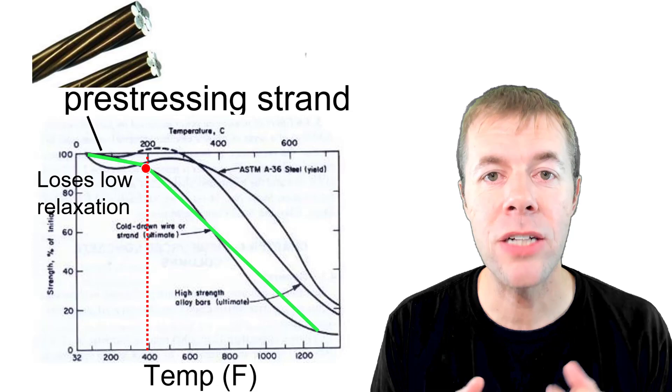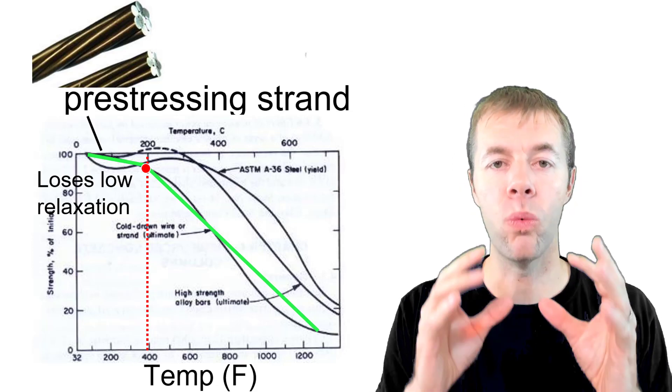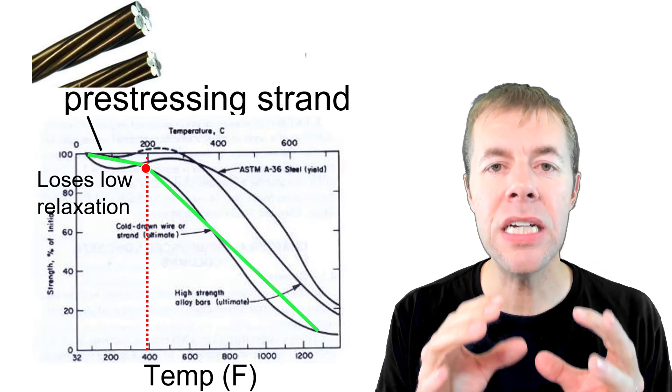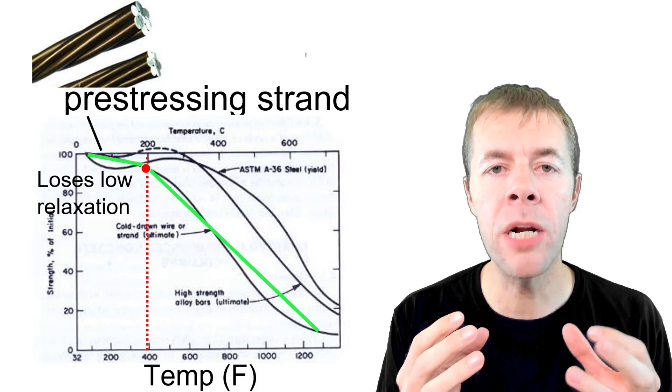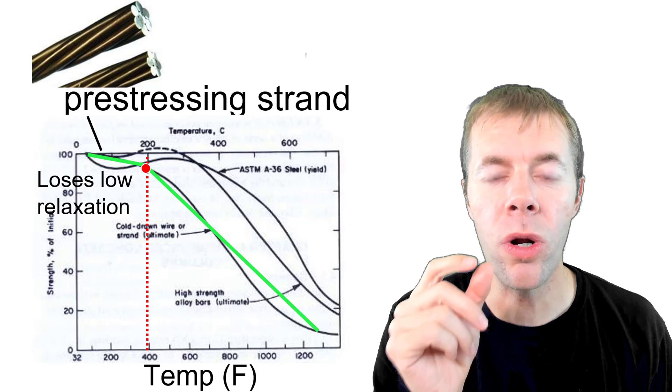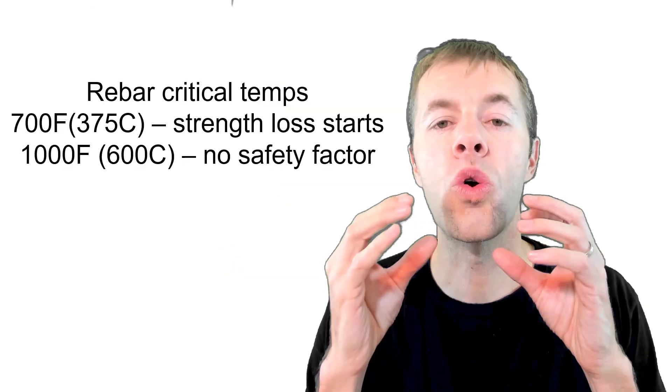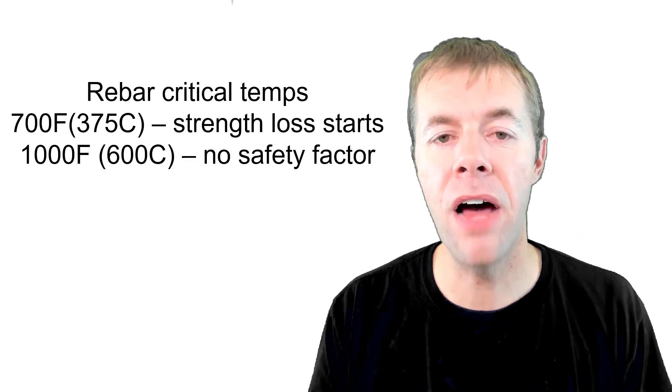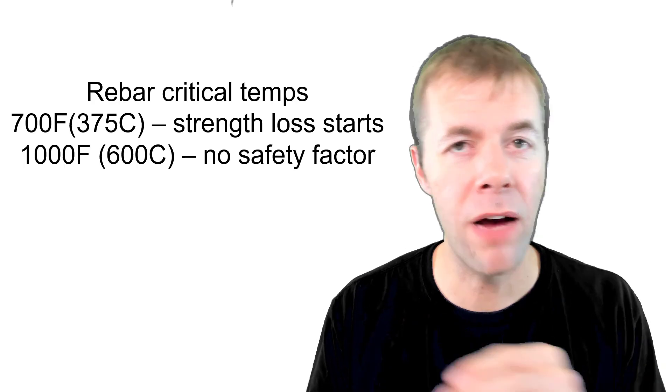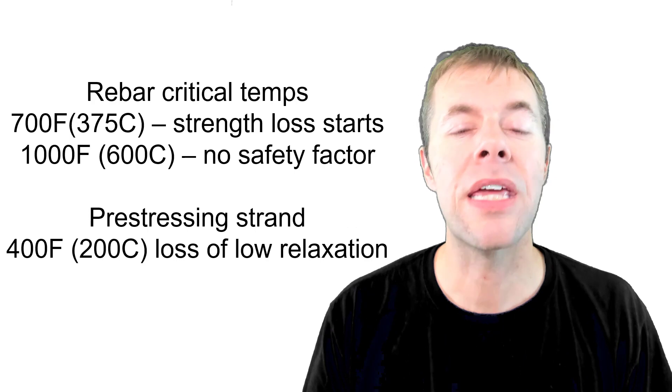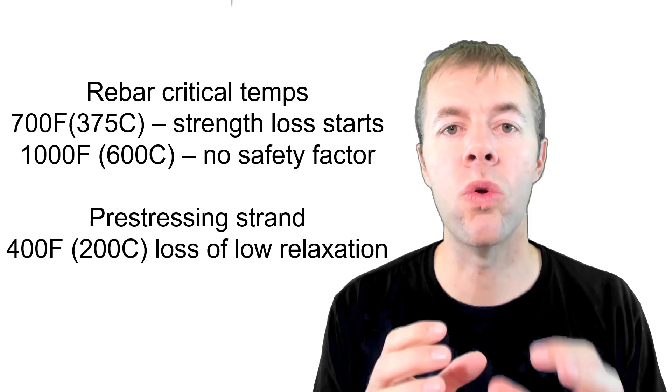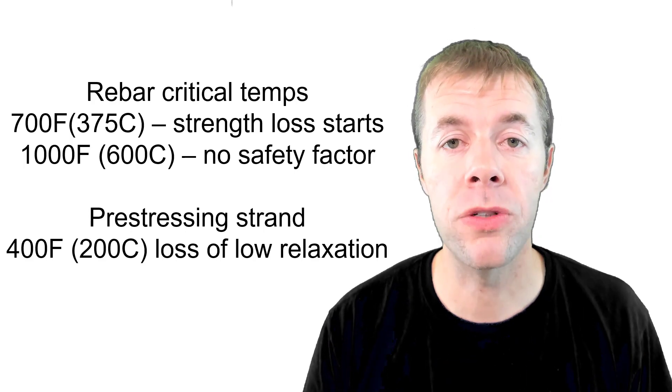If we're using pre-stressing strand, that's shown in this line. Now our limit is at 400 degrees Fahrenheit. You're like, whoa, what do you mean? That's like not even near this loss and safety factor. Why are we so worried about 400 degrees Fahrenheit? Well the steel will lose its low relaxation quality. It means under a constant load it will just creep or move. That means the structure over a long period of time will deflect and deflect and deflect. This is something that pre-stressing steel is designed not to have happen to it, but it loses this quality if it reaches 400 degrees Fahrenheit. So the critical temperatures for rebar are 700F for strength loss and 1000F, that means when you have no more safety factor left. But pre-stressing strand is a little bit different. It can't get as high temperatures. At 400F, it loses its low relaxation qualities and that is a huge problem for the performance of your concrete structure.